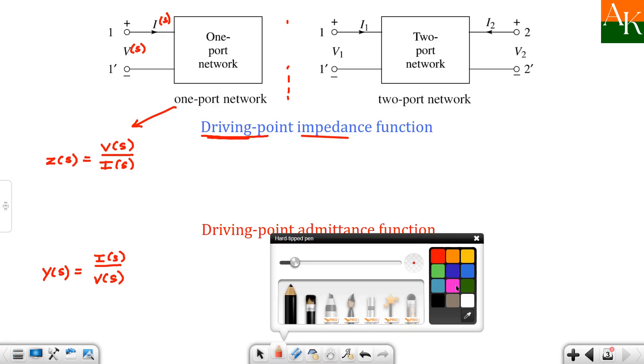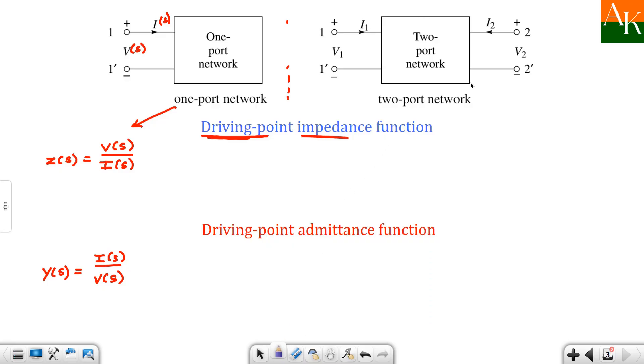So we will go for driving point impedance function of two port network. So this means the ratio will be v1 of s by i1 of s. Keep this in mind - the quantities should be defined at the same port in driving point function. So v1 by i1 - this cannot be shown with just the z letter, here we will add a suffix. Both places have one one - the denominator's one we will write first here and the numerator's one over here.